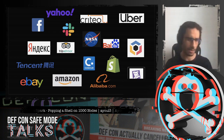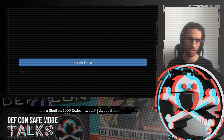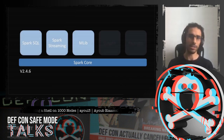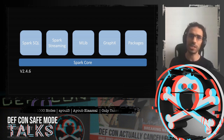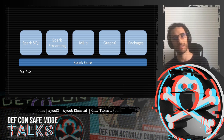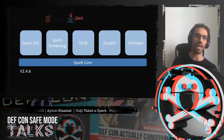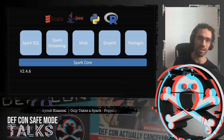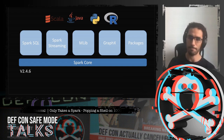Spark was adopted by the Apache Foundation and grew to encompass many aspects of data analytics — SQL, streaming, machine learning, graph processing. It's developed half in Java, half in Scala, but also has connectors in Python and R.